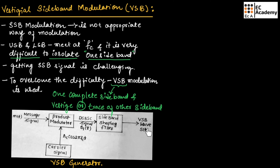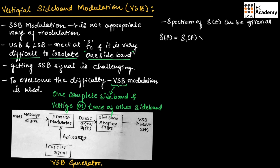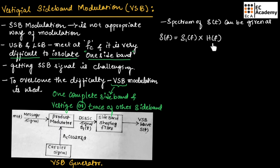The signal produced is represented as S of T. Therefore, the spectrum of S of T can be given as S of F equals S1 of F multiplied with H of F. Here, S1 of F is the DSBSC signal produced by the product modulator. The product modulator takes the message signal and multiplies it with the carrier signal AC cos(2π FC T) to produce the DSBSC signal S1 of T. H of F is the transfer function of the sideband shaping filter.